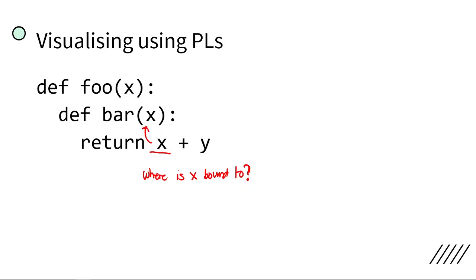It is not bound to the first foo. It's because it always goes to the closest binding — meaning which abstraction or which parameter is nearest. So, to explain it: this x is bound to the inner function here, not to the outer one.